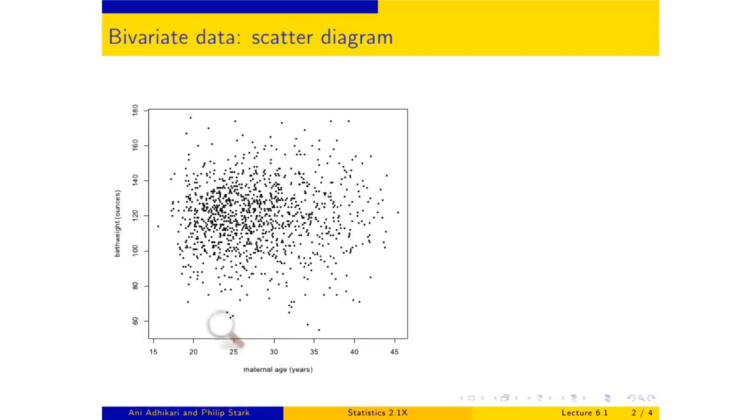So this point here, for example, this corner one, which is easy to identify, is a pair where the mother is just under 20 years old and the baby's weight is just over 70 ounces. And so each of these points corresponds to a mother-baby pair. And just looking at this, you can see that there's plenty of crowding around here, corresponding to the fact that most of the women were in their 20s.